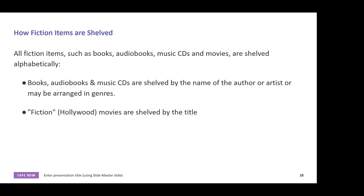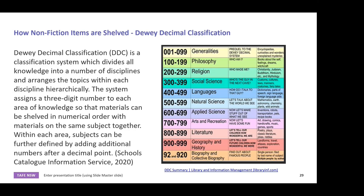There is a difference in libraries about how fiction items are shelved compared to nonfiction. All fiction items — such as books, audiobooks, music, CDs, and movies — are typically shelved alphabetically by the name of the author or artist, but may be arranged by genres. Fiction like Hollywood movies are shelved by title. So basically books and audio are done by author, whereas movies are done by title — a typical way of arranging fiction items in a library.